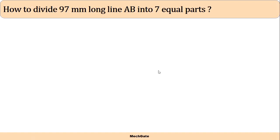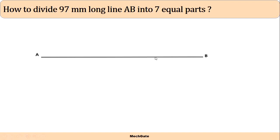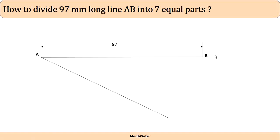Let's see how to divide a particular line into seven equal parts. First, draw the 97 millimeter long line AB. This is our main line AB, also represented with a dimension line showing 97.